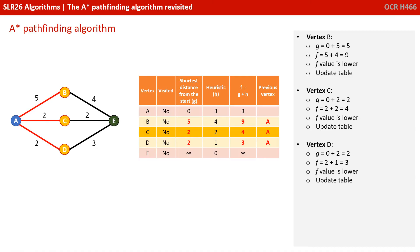In a similar way, when we calculate the F values of C and D, we find that their values are lower than the ones they were storing, so we update the table in a similar way.